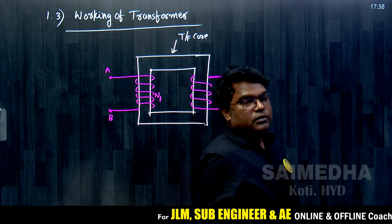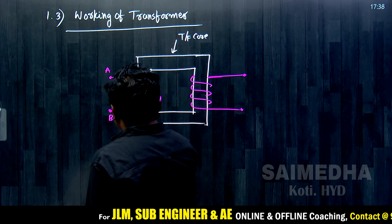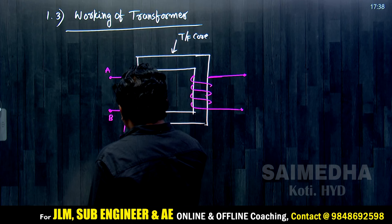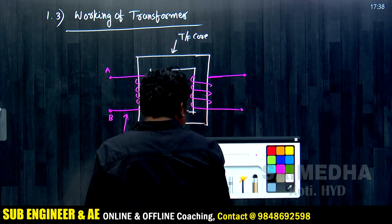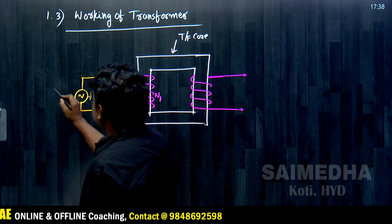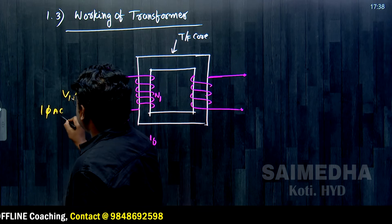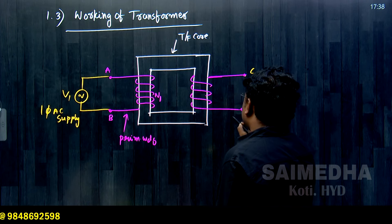Terminals A and B form winding 1, that is the primary winding. We call it the primary winding because we are connecting the supply to this winding. A single-phase AC supply is given here, and that is why this winding is called the primary winding.